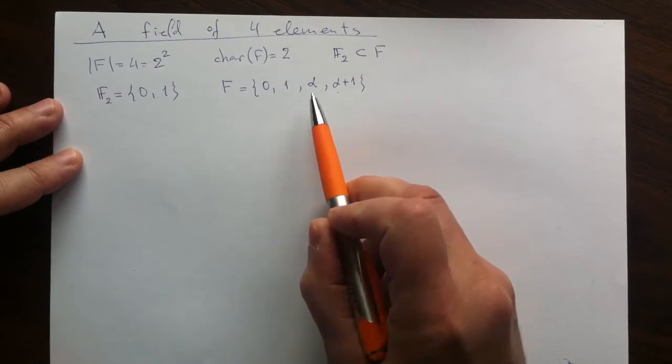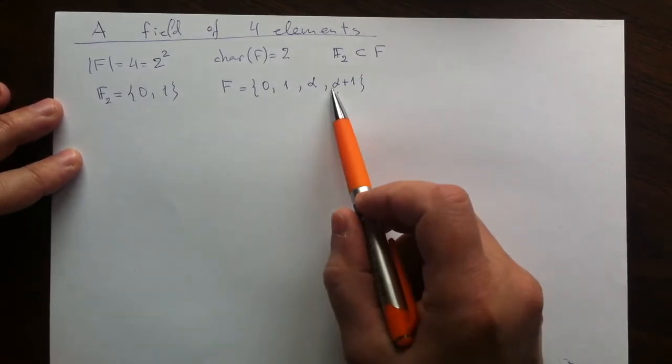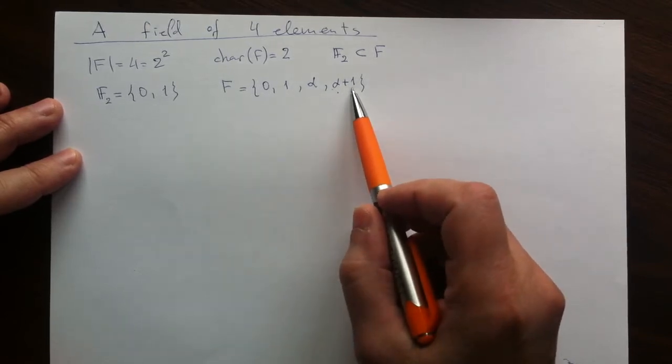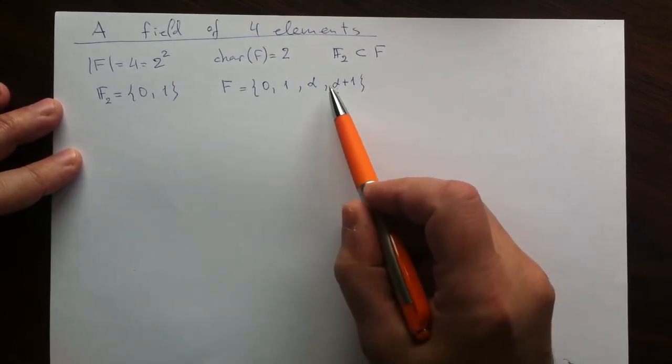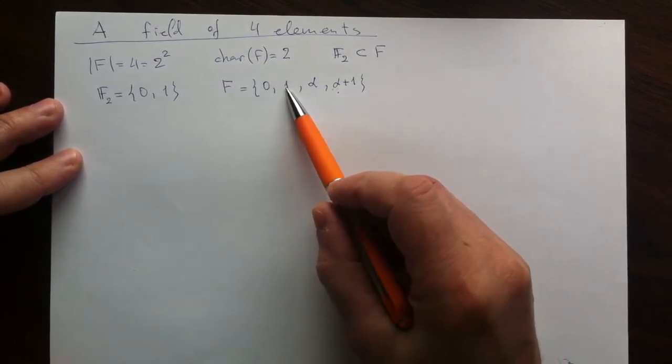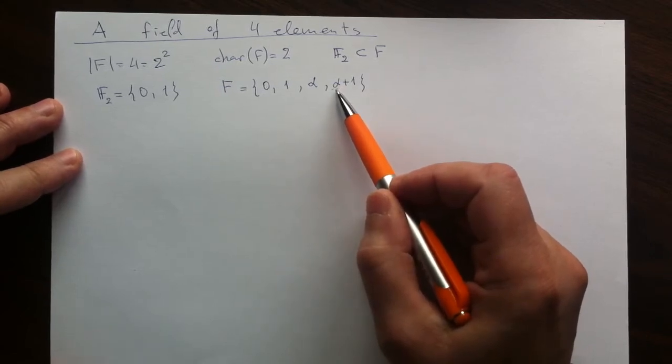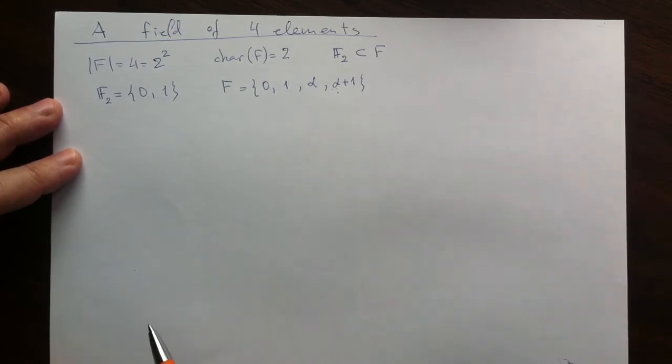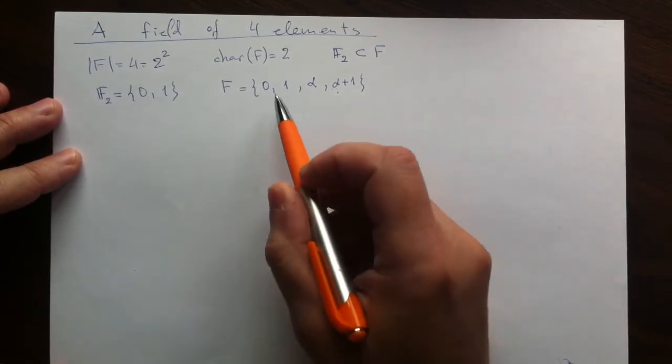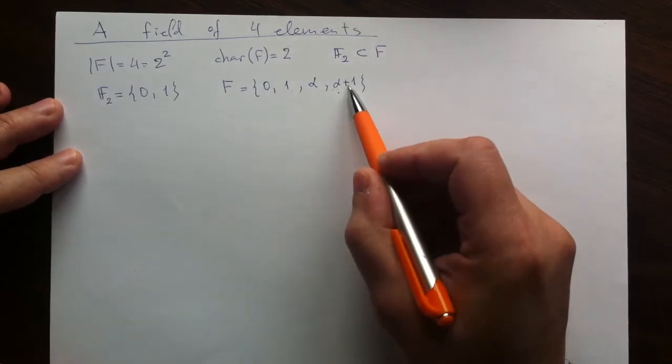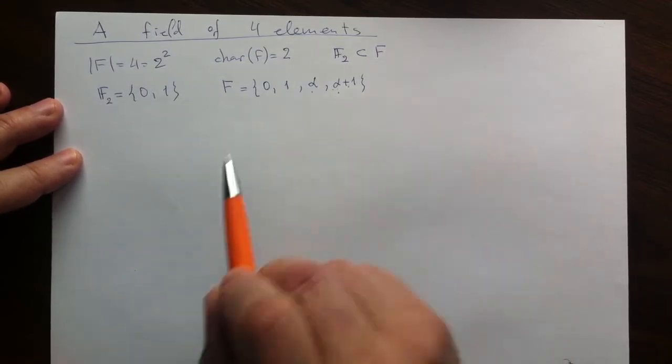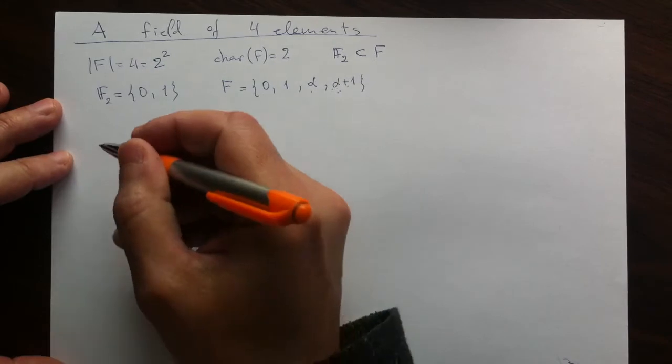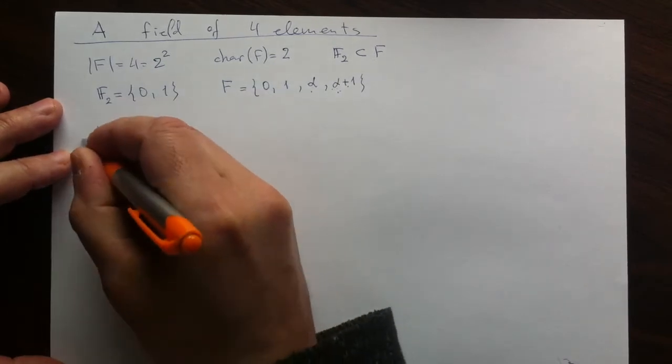Well, why am I so sure that this is none of the previous? Well, if I just look at possibilities of that being 0, then it would be saying that alpha is negative 1, which is the same as 1. If alpha plus 1 is 1, then that is to say that alpha is 0, which is again a contradiction with the choice of alpha. And finally, if these two coincide, that is saying that 1 is 0, which is not true. So that is a different element to the element alpha. And I will be using this notation because it's easier to use for computational purposes.